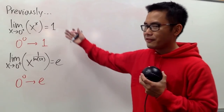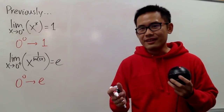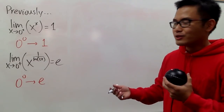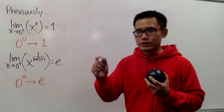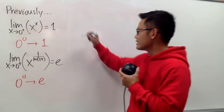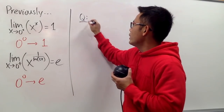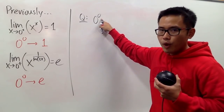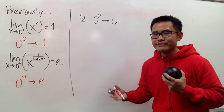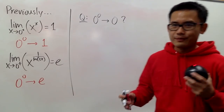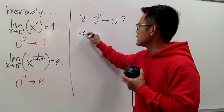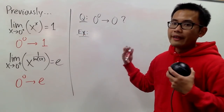If you guys haven't seen my videos on these two limits, I will link the videos in the description. Now we have another question: what if I want to have a 0 to a 0's power — is it possible to be approaching 0? So let me write this down. What if I want to have a 0 to a 0 indeterminate form, and I want the limit of this to be 0 as well? Is this possible?